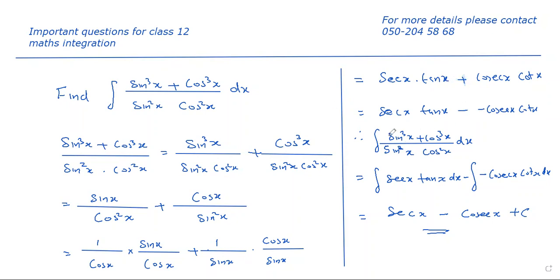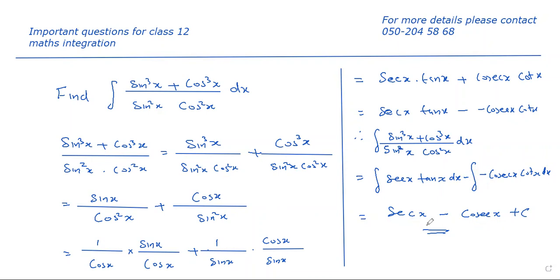So the entire function, integral of (sin³x + cos³x)/(sin²x · cos²x) dx, becomes integral of sec x · tan x dx minus integral of (−cosec x · cot x) dx. The integral of sec x · tan x is sec x, and minus of (−cosec x · cot x) is cosec x. So the final answer is sec x − cosec x + C.